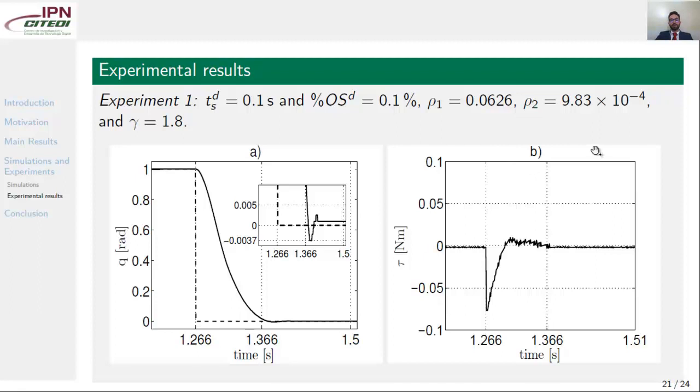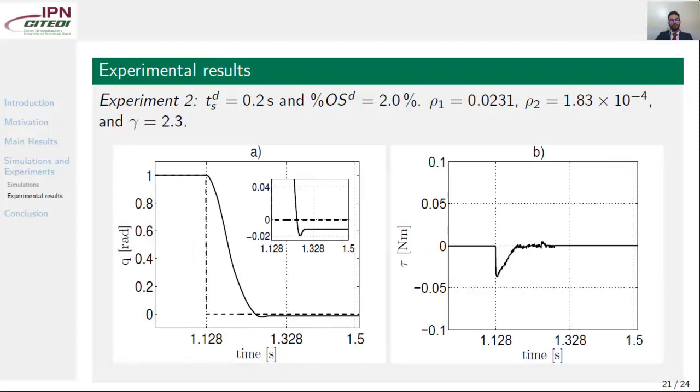For the second experiment, we tried to reproduce the results that we get from the second simulation. So, we also want a settling time of 0.2 seconds and percent overshoot of 2%. Applying the methodology, we get rho1, rho2, and gamma. Figure A shows the step time response. And figure B shows the control input. As we can see here in the second experiment and also in the first experiment, the results are not accurate in comparison with the simulations. One justification is we are dealing with a real process where non-linearities are present.